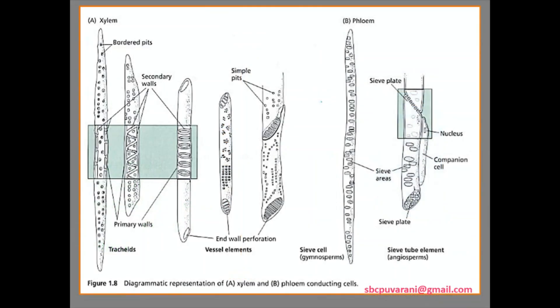Now we are showing the phloem structures by means of companion cells and sieve plates. Now we are representing a diagrammatic representation of xylem and phloem. This shows the tracheids, vessel elements, sieve tubes and sieve tube elements.